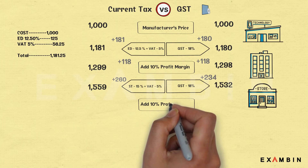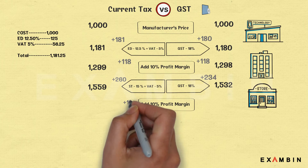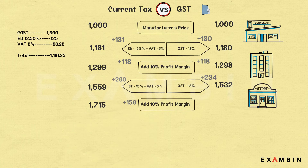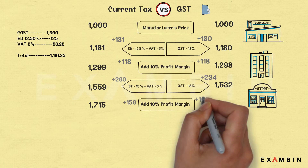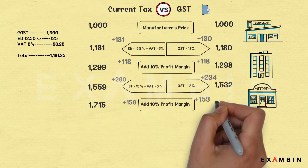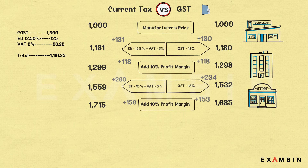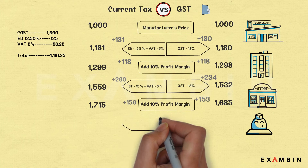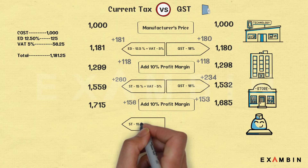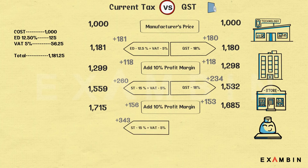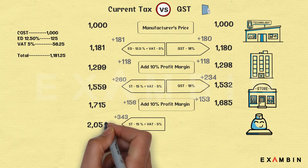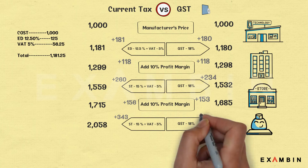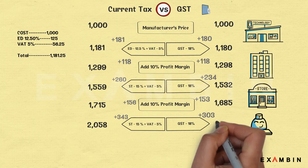The store then sells the software product to the end customer, adding a 10% margin. Adding 10% to 1559 rupees gives 1715 rupees in the current system. In GST, 1532 into 110% gives 1685 rupees. The customer also needs to pay tax: in the current system, service tax of 15% plus VAT of 5% brings the total price to 2058 rupees. In the proposed GST system at 18%, it will be 1988 rupees.